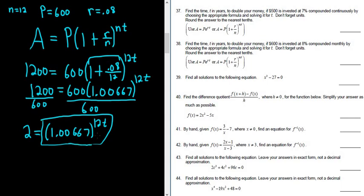So now we can solve for t by taking the natural log of both sides. So natural log of 2 equals natural log of 1.00667 to the 12t.